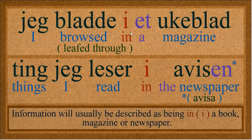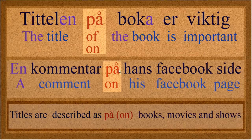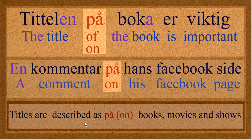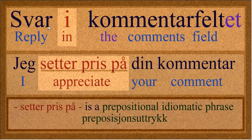Here's an example: i et blad — in a magazine. In the newspaper, in a book — information in a magazine. But the title of a book would be på boka. And a comment would be på hans Facebook — Paul Hans Facebook. You just remember that. Titles are described with på for books, movies, and shows. And it's a reply in the comments field — i kommentarfeltet. These examples are just a few of thousands — it's basically up to you to learn them one at a time.